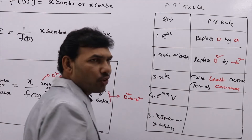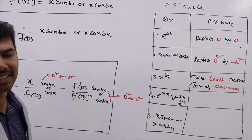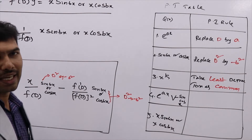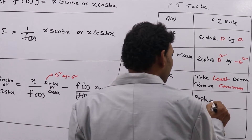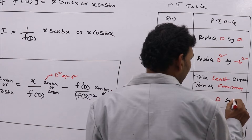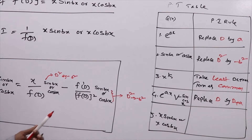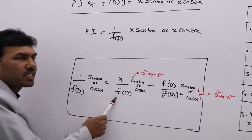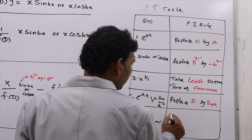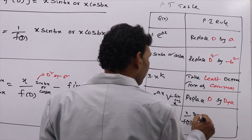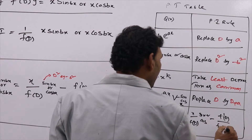If you have e^(ax)·V, where V may be sin, cos, or x — for example x·sin(x), x·e^(ax), sin(x)·e^(2x), cos(x)·e^(3x) — then you need to replace D by (D+a). Write (D+a) in the place of D. If you have x·sin(bx) or x·cos(bx), simply write the formula. So these are the five rules for evaluating the particular integral of a given higher-order ODE.